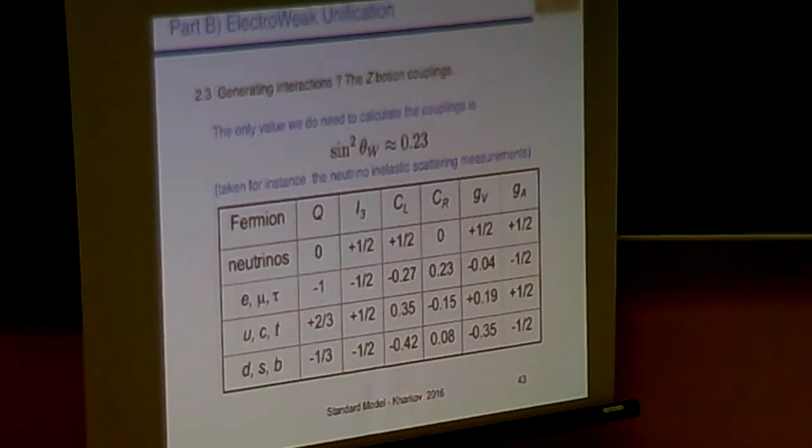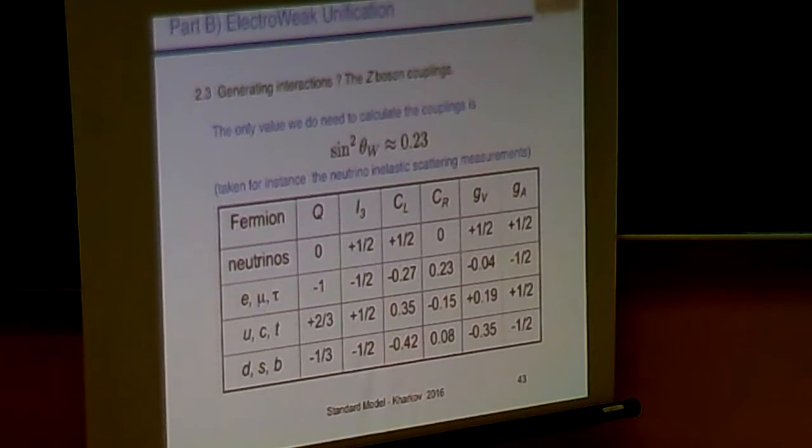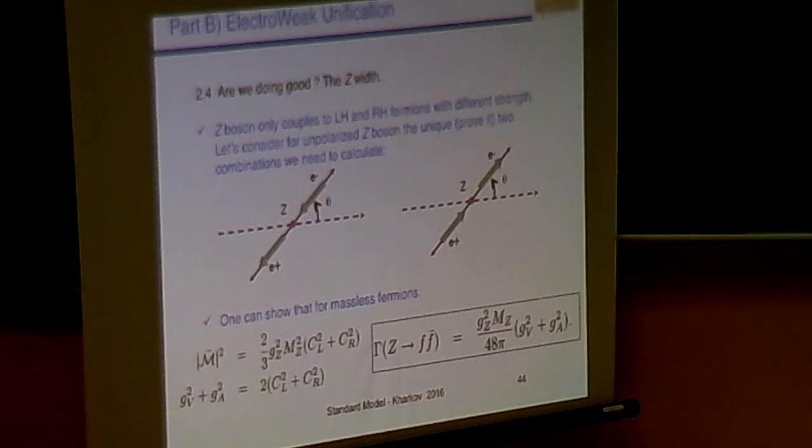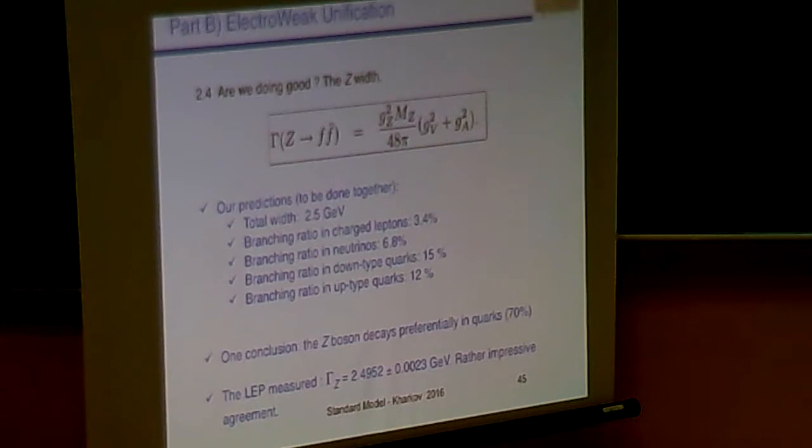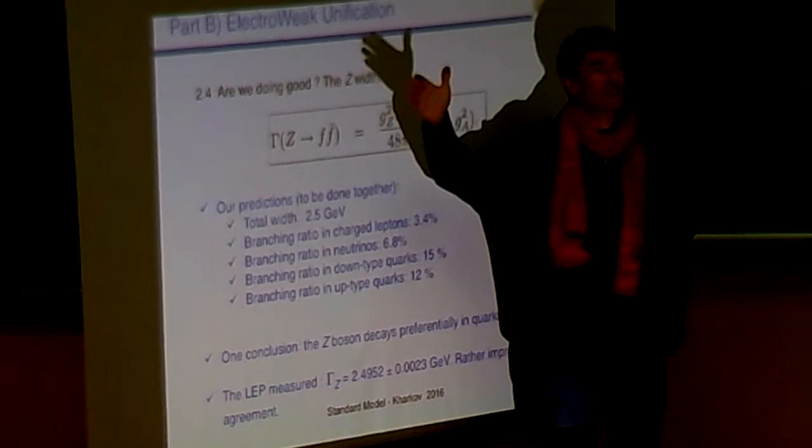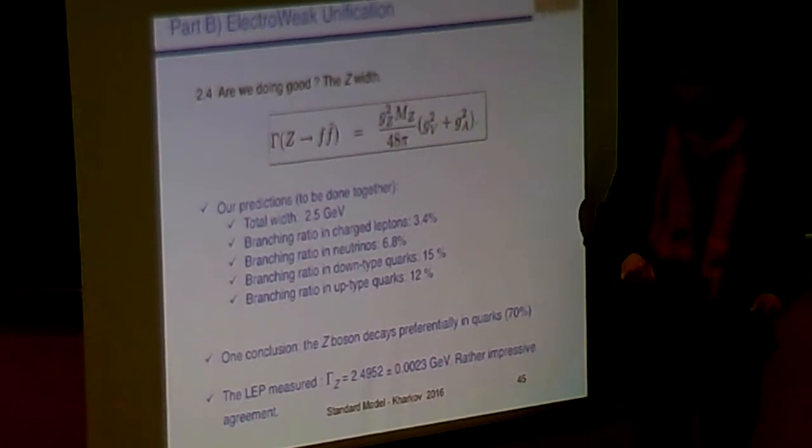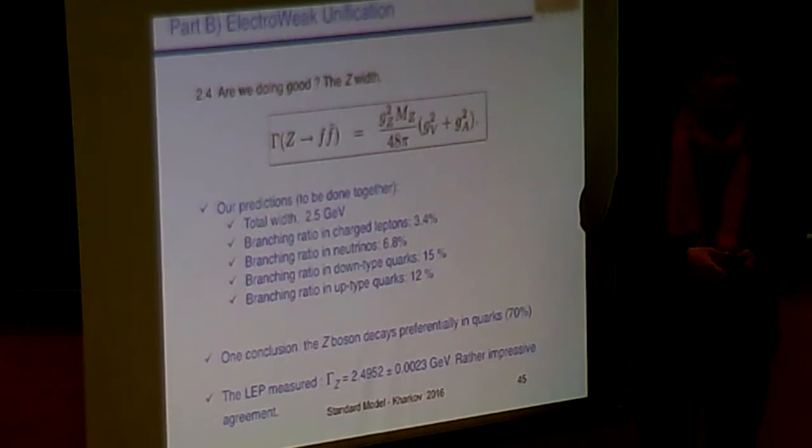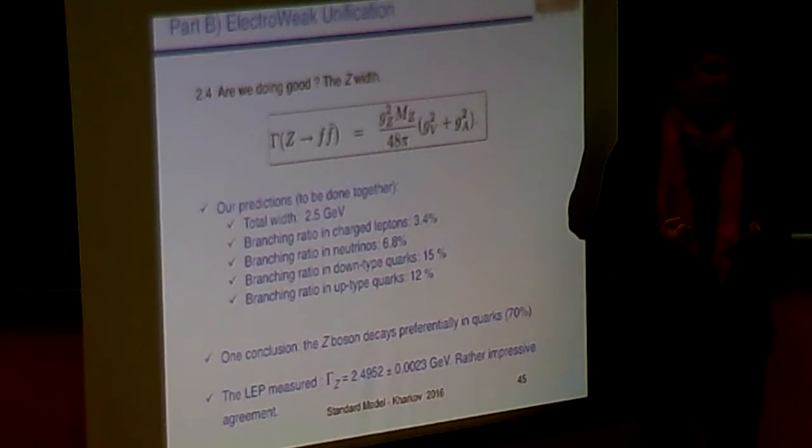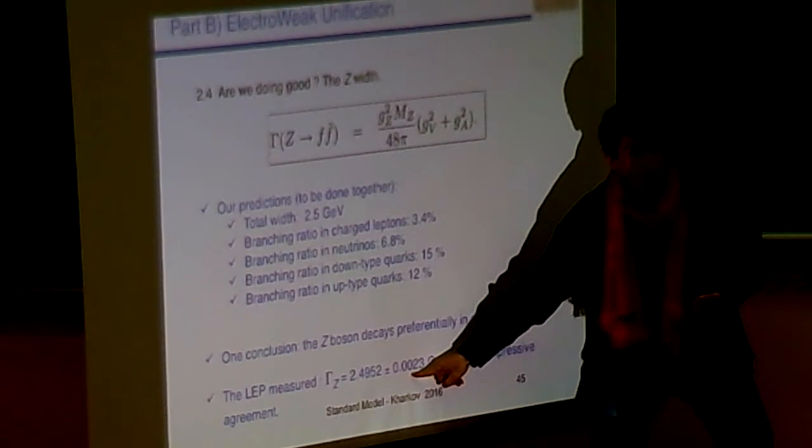So this is something I do like when we are making those calculations. It takes five blackboards. You have initially matrix elements which are the size equivalent to the blackboard, right? And at the end, it's as simple as this. So what do we have in that expression? G_Z. G_Z is nothing else than g_W but mitigated by the cosine θ_W. So it's just the convenience of notation. What else? The mass of the Z, yes, that's the parameter of the game. 48π, this has to come from both phase space and calculations of the constant. And this is as simple as G_V squared plus G_A squared.